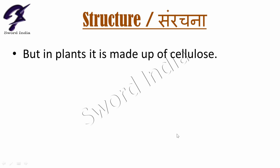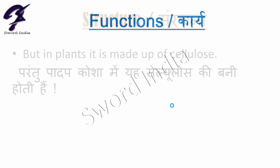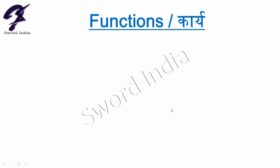But in plants, it is made up of cellulose. Parantu padap koshika mein cellulose ki bani hoti hai. So we know that the cell wall in a plant cell is made up of cellulose. Now let's discuss some functions of the cell wall.